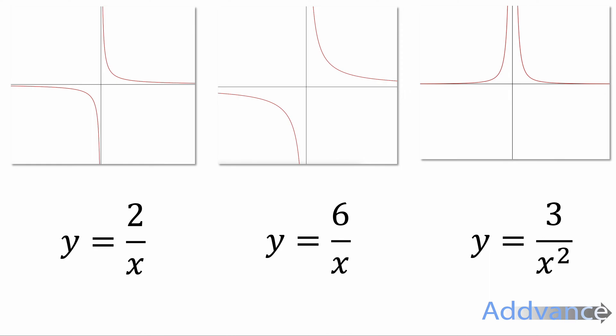And then finally, the one on the right is y equals 3 over x squared, or it could be y equals 4 over x squared. Anything like that. And the squaring just makes it go up to the top because it makes it positive. And those are the reciprocal graphs you need to know.